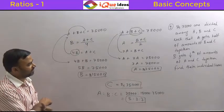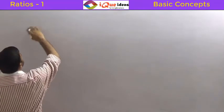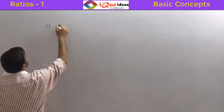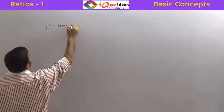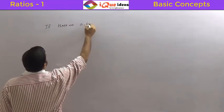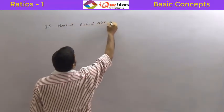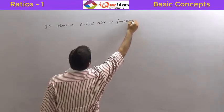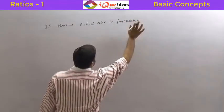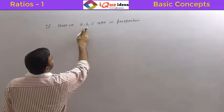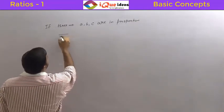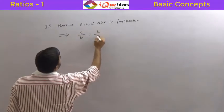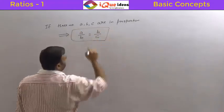Ratios and their properties. When we say 3 numbers A, B, C are in proportion, we simply mean that A by B is equal to B by C.